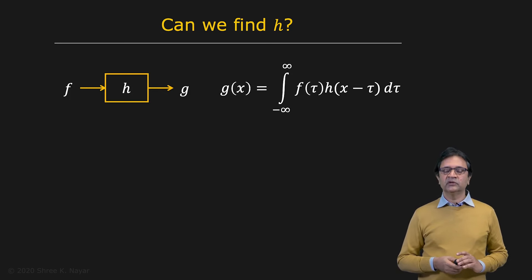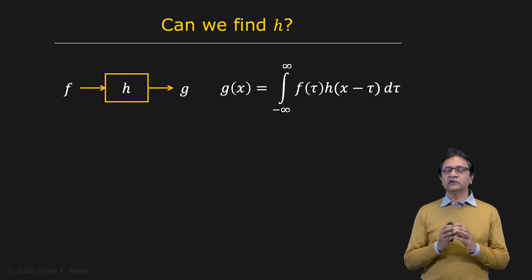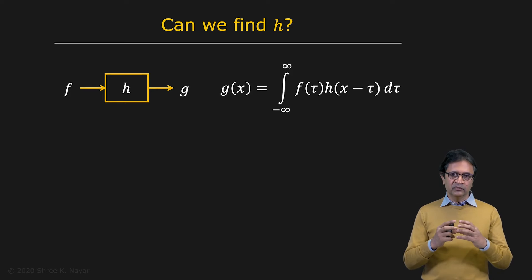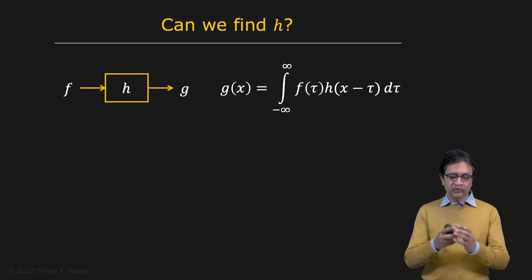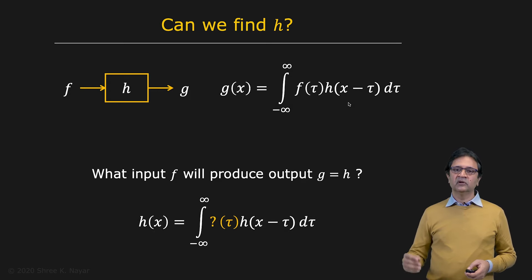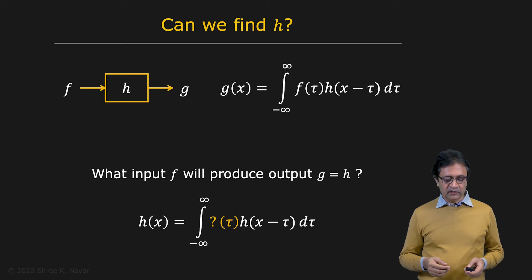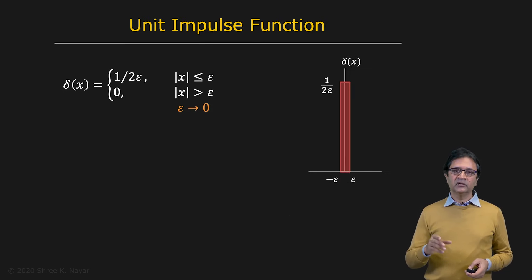So now let's assume that you're given a system that is a linear shift invariant system — you know it's doing a convolution, but you don't know what it's convolving the input with. It's convolving it with some function h, but you have no liberty to open up this system to understand it. It's given to you like a black box. You'd like to find h. Here is your definition of convolution, and the question is: can we apply an input to this system such that what comes out is h? And it turns out that that input is the unit impulse function.